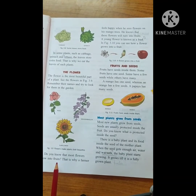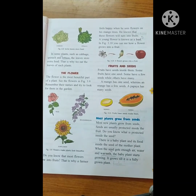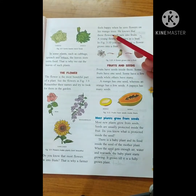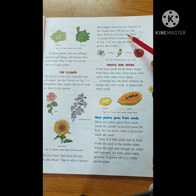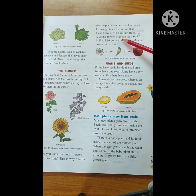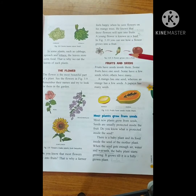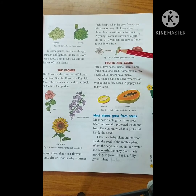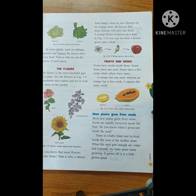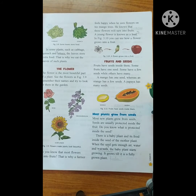Do you know that most flowers grow into fruits? That is why a farmer feels happy when he sees flowers on his mango trees — he knows that these flowers will turn into fruits. A young flower is known as a bud. Whenever the flowers are arriving on the trees, the farmers will be very happy.